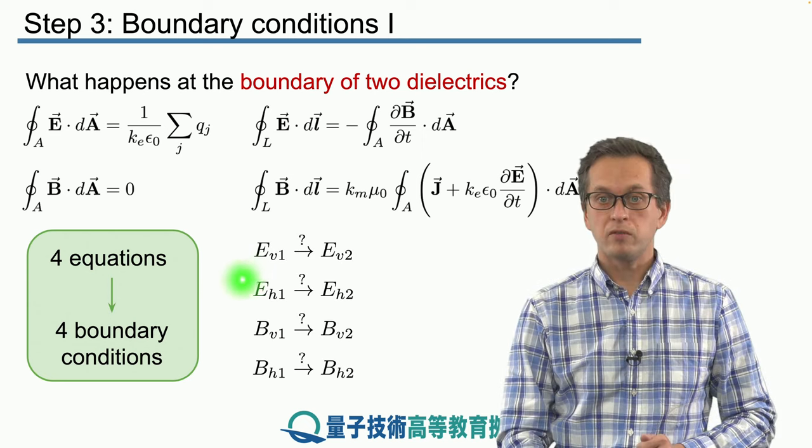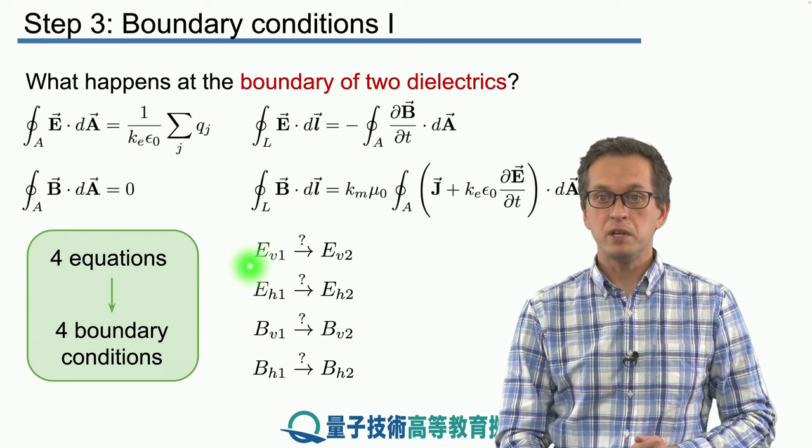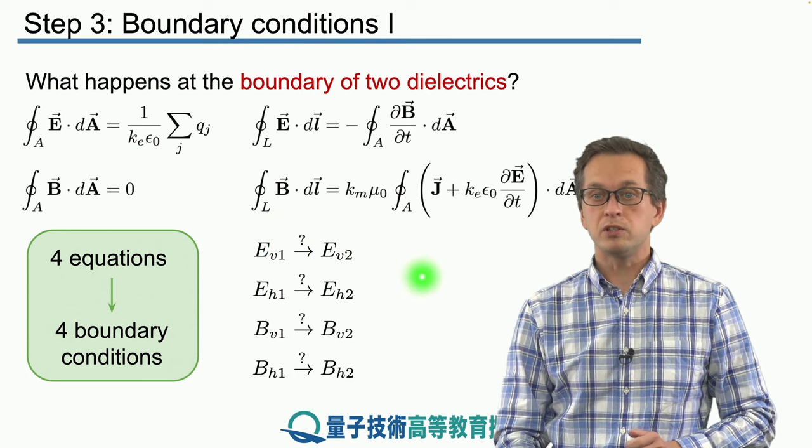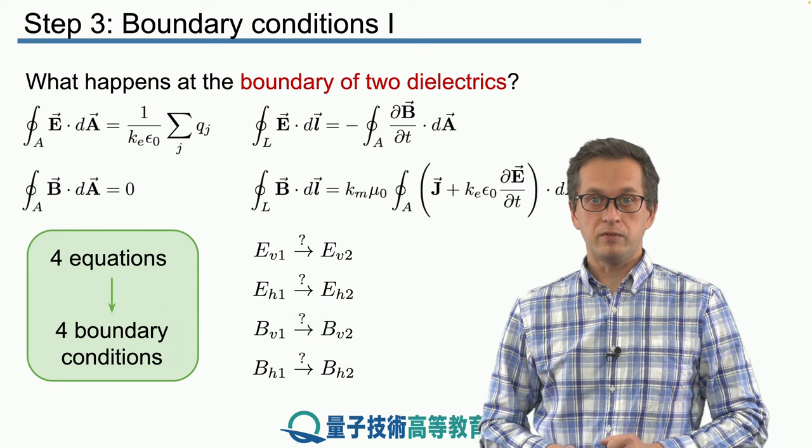So we are looking for precise relationships between Ev1, Ev2, between Eh1, Eh2, and the same for the magnetic field components.